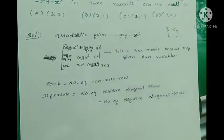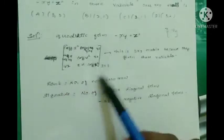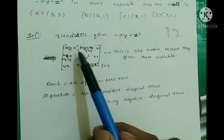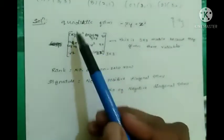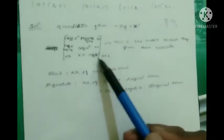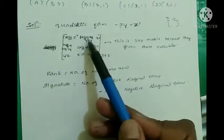The main question is how to construct the matrix from the quadratic form. The trick is: first write down all the diagonal values. The first diagonal value is the coefficient of x squared, the second diagonal element is the coefficient of y squared, and the third diagonal element is the coefficient of z squared.